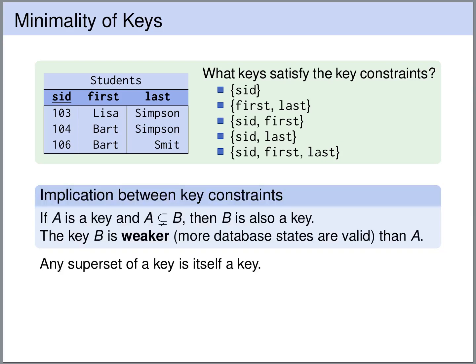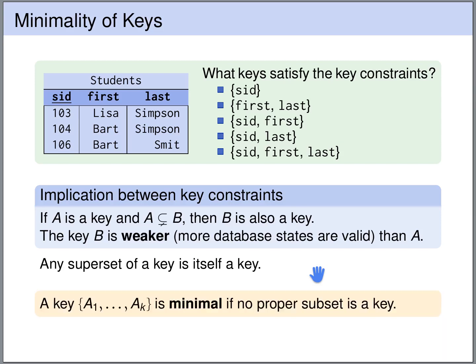We have seen that if you take a key and add more attributes, it remains a key. In general, whenever A is a key of a relation and B is a superset of A, then B is also a key — though adding attributes makes the key weaker and allows more database states to be valid. A key is called minimal if there is no proper subset that is also a key, meaning we cannot drop any attribute without destroying the unique identification property.